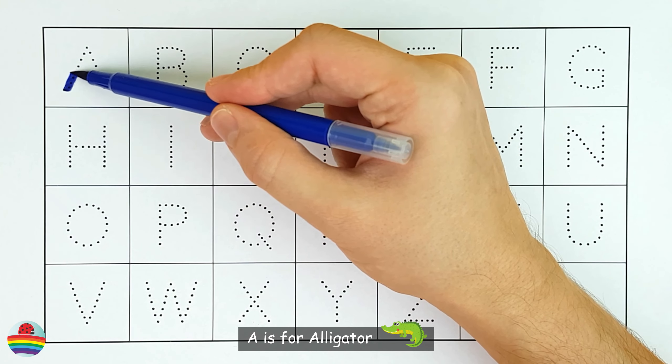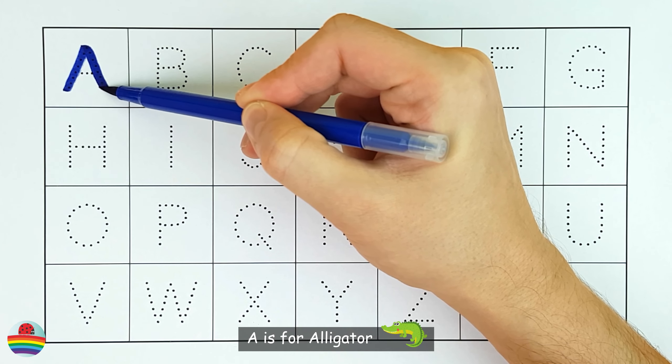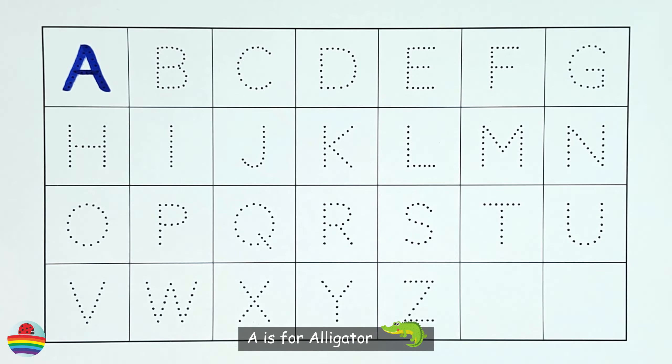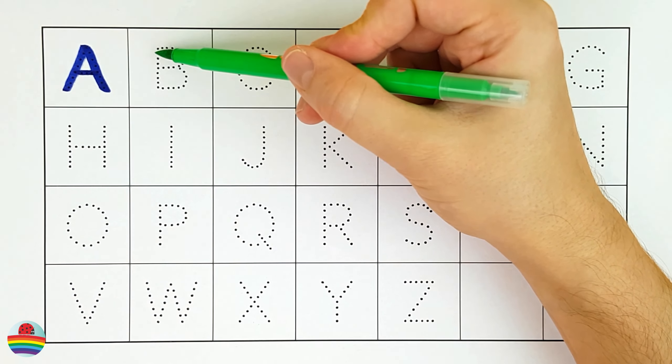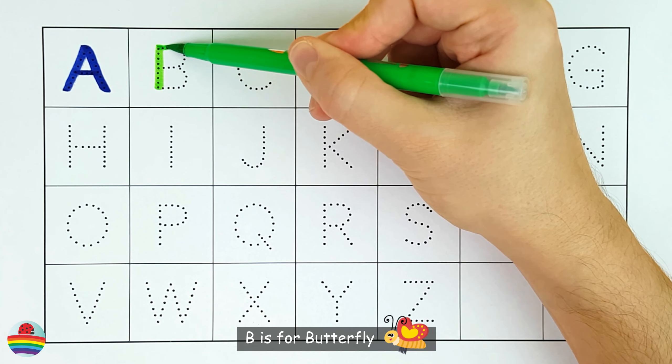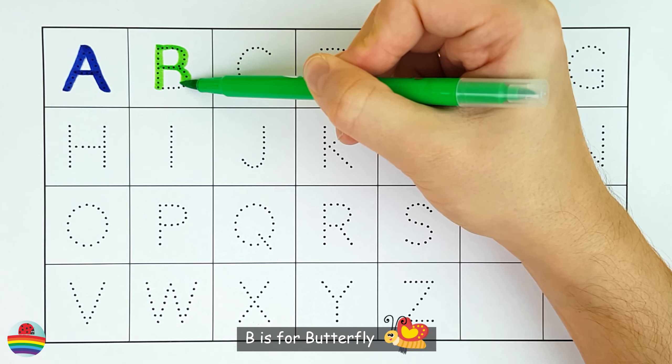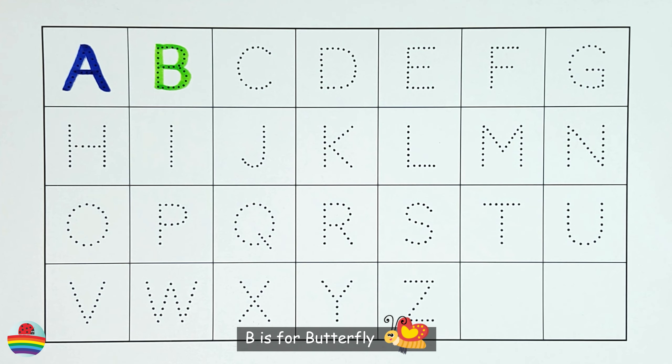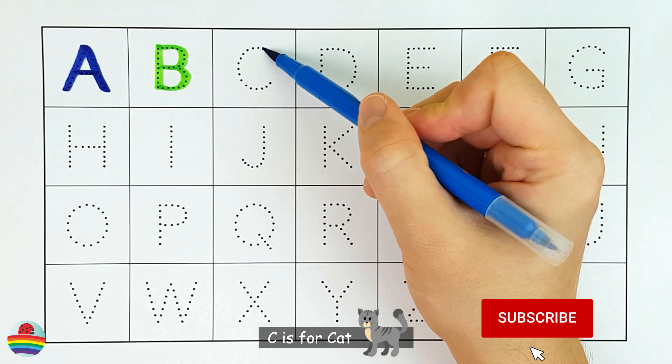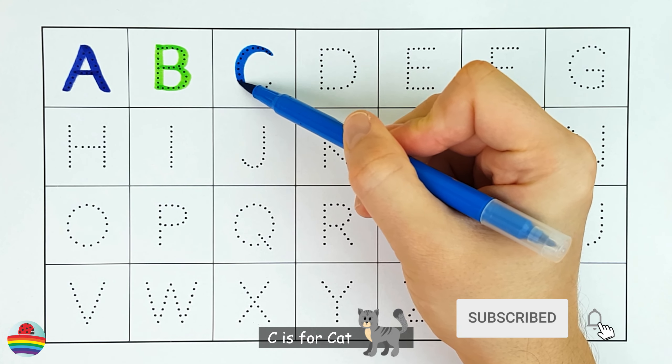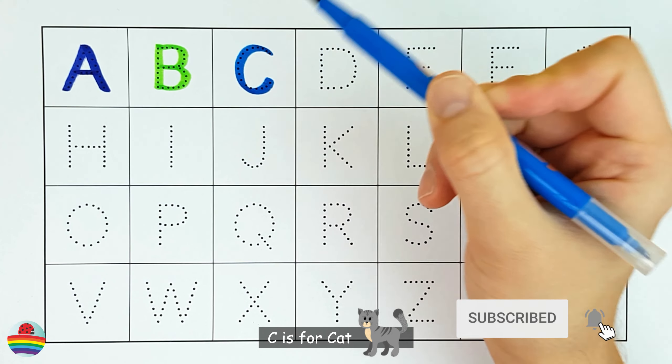A. A is for Alligator. B. B is for Butterfly. C. C is for Cat.